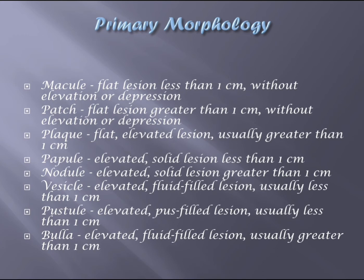A plaque is a flat elevated lesion usually greater than one centimeter — note the word 'elevated.' A papule is less than one centimeter elevated. The difference between papule and plaque is just the size: papule is less than one centimeter and plaque is greater than one centimeter. A nodule is an elevated solid lesion greater than one centimeter — note 'solid lesion.'